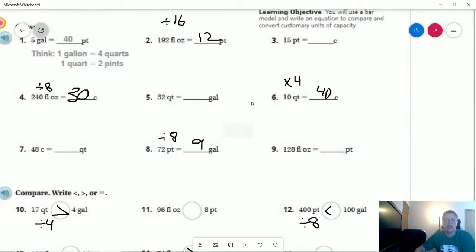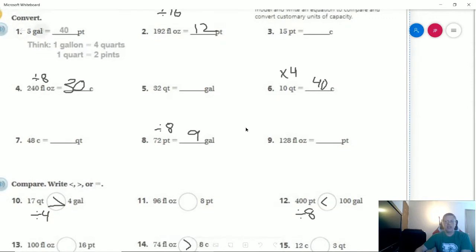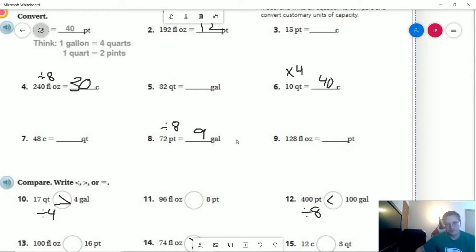Number 6, we would have 2 cups in a pint, 2 pints in a quart, and so that would be 4 cups to a quart. So we're going to multiply by 4 to get 40. Number 8, we are going to divide by 8 because 2 pints to a quart and 4 quarts to a gallon. That would give us 8 pints to a gallon, and so that would give us 9.